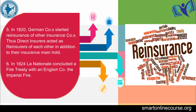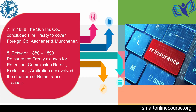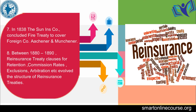In 1820, German companies started reinsuring each other. Thus, direct insurers acted as reinsurers of each other in addition to their main insurance business. In 1824, La Nationale concluded a fire treaty with an English company, the Imperial Fire. In 1838, the Sun Insurance Company concluded a fire treaty to cover foreign companies — Aachener and Münchener.